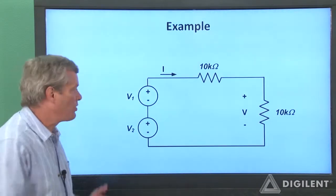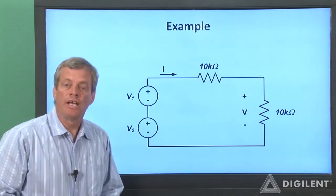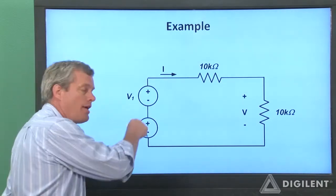Let's convert the previous circuit to this circuit, which has two sources, V1 and V2.